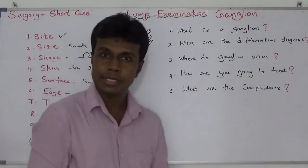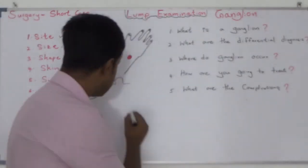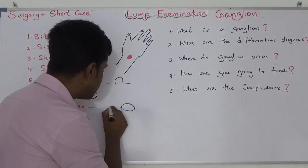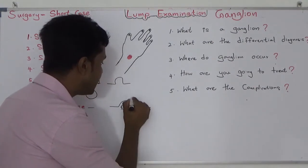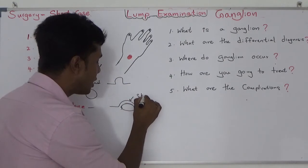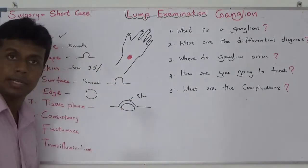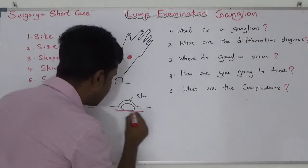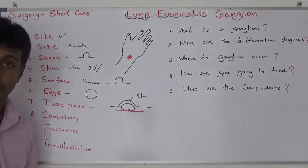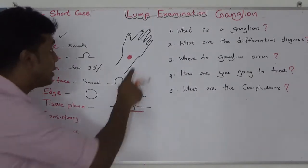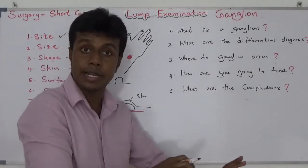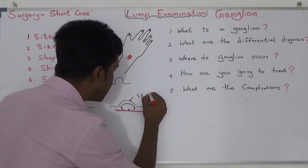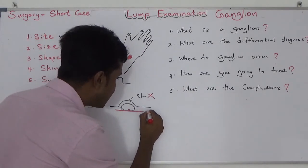Regarding tissue plane: the lump is not attached to the skin, but it is attached to the underlying tendon — specifically the extensor tendon. It does not attach to the skin but does attach to the tendon.